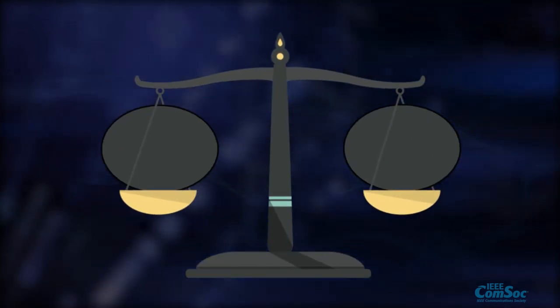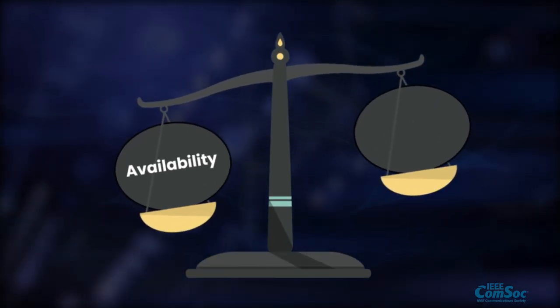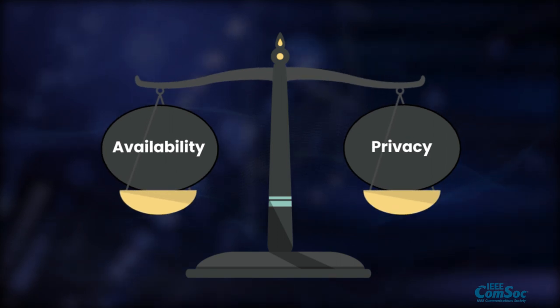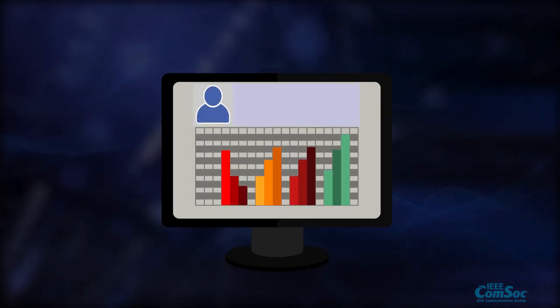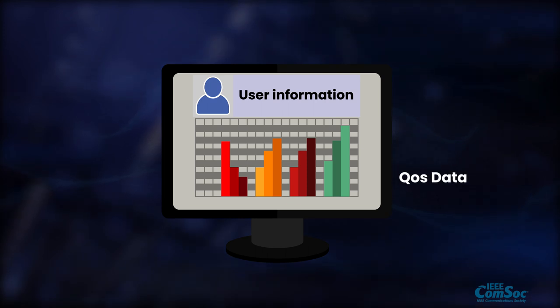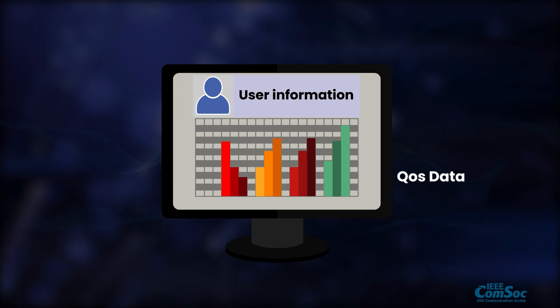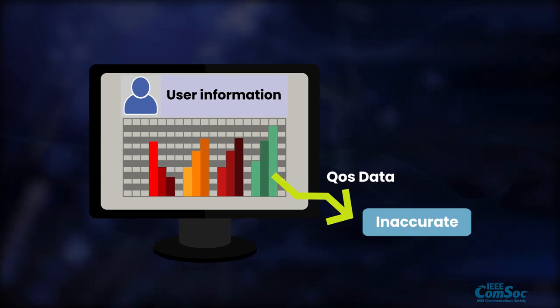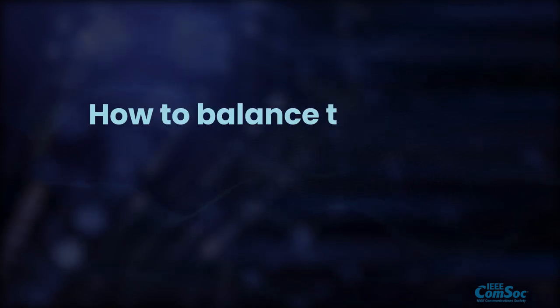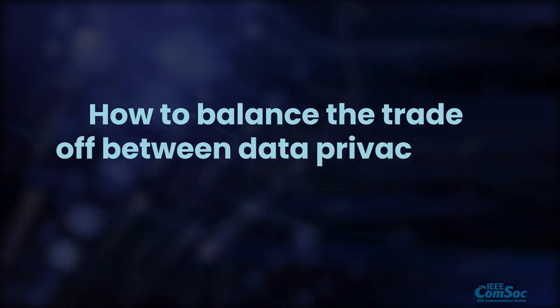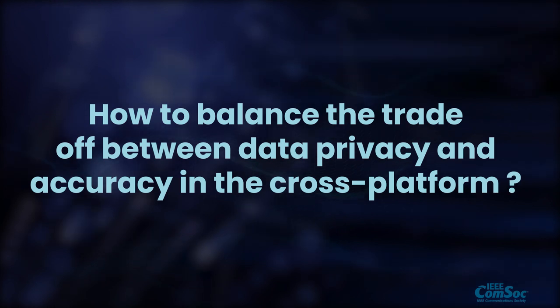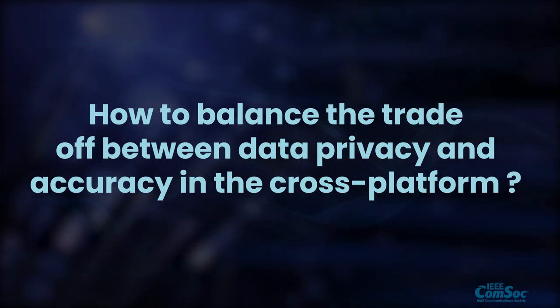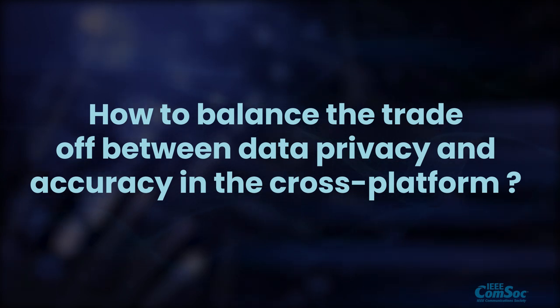Second, due to the common trade-off between data availability and privacy in data-driven applications, protecting private user information in QoS data will probably decrease the availability of QoS data by finally producing inaccurate recommended results. Therefore, how to balance the trade-off between data privacy and accuracy in the cross-platform recommendation scenarios is becoming a practical and significant challenge that needs intensive study.